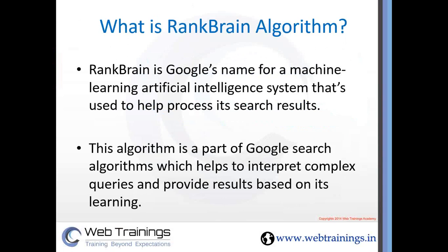According to Google, what is the RankBrain algorithm exactly? It's simple: RankBrain is an artificial intelligence system which learns about the different queries and the different data that have been tried by users, and then it tries to understand that data and provide results back to the users.